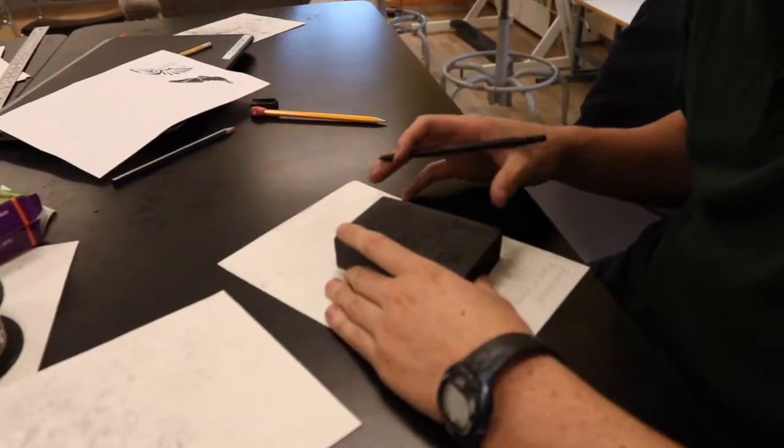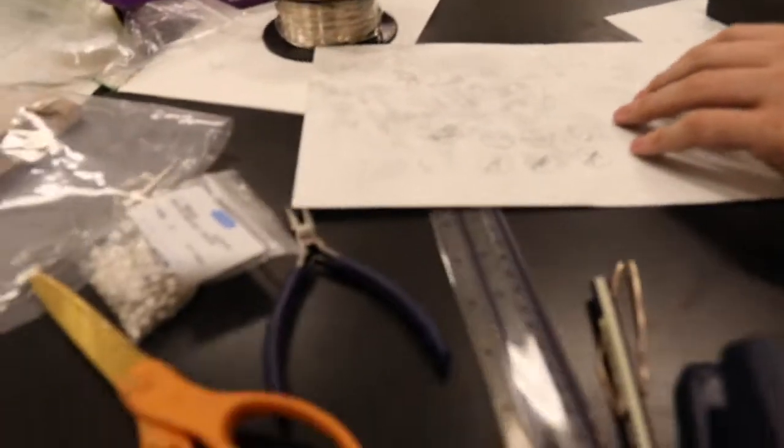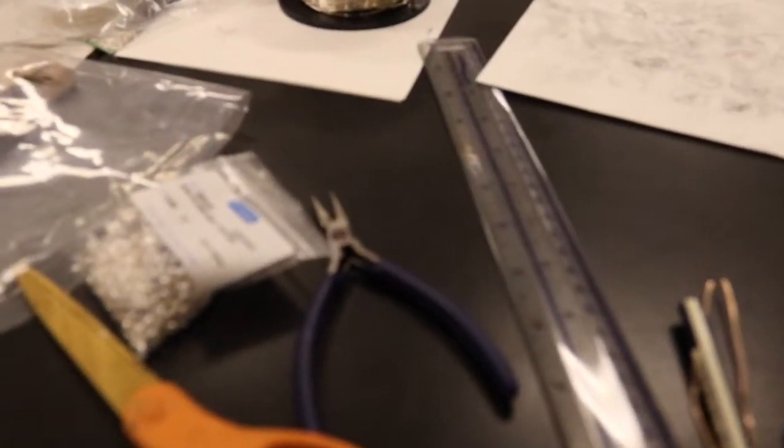Gabe is making something for his brother. His brother's into running, so he's making a pendant and a bracelet. He's got a landscape that somebody might run through and also an image of a runner.